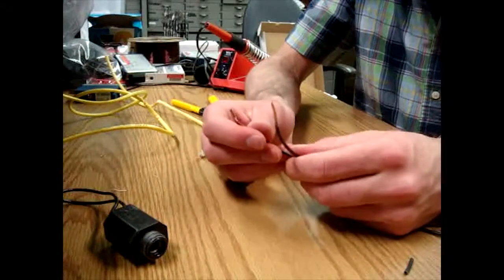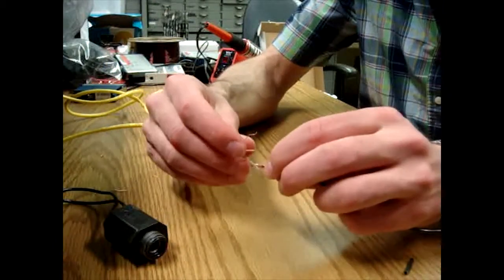Connect your solenoid cables to two of the cables in your CAT5 cable. This connection needs to be waterproofed.